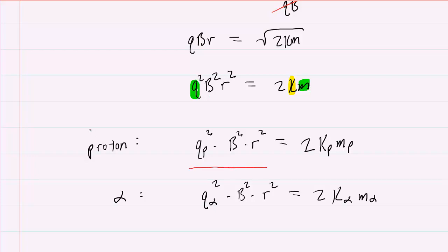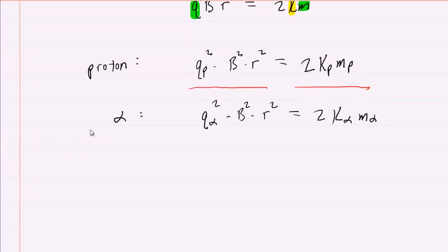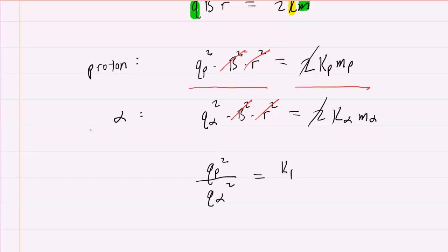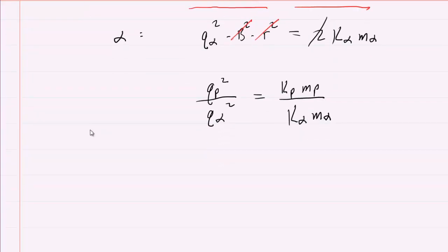Now we'll divide the two equations, and this sets up a convenient proportion. Notice that the magnetic fields will cancel and the radii will cancel. This leaves us with the charge on the proton squared divided by the charge on the alpha particle squared equals — the 2s cancel — the kinetic energy of the proton times the mass of the proton divided by the kinetic energy of the alpha particle times the mass of the alpha particle. This will be a very convenient setup.